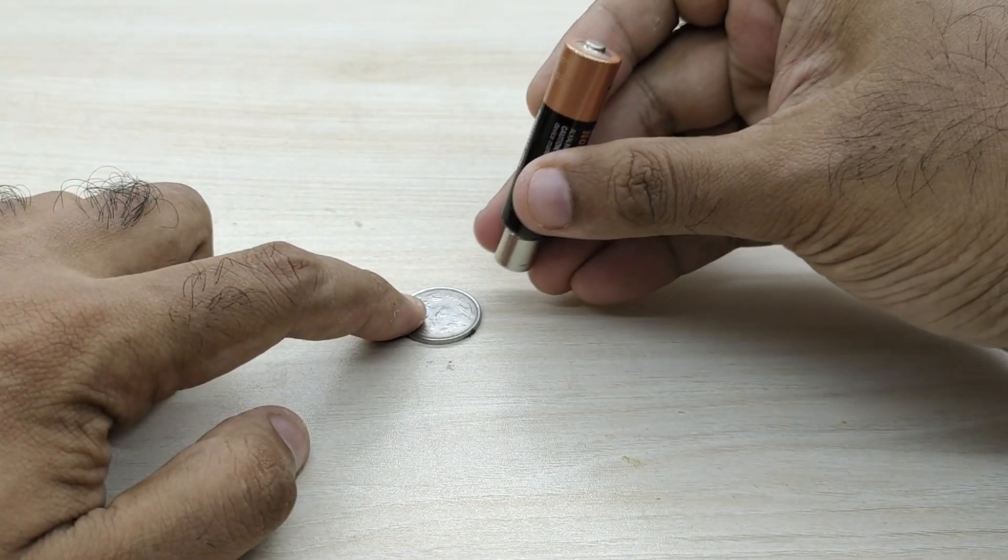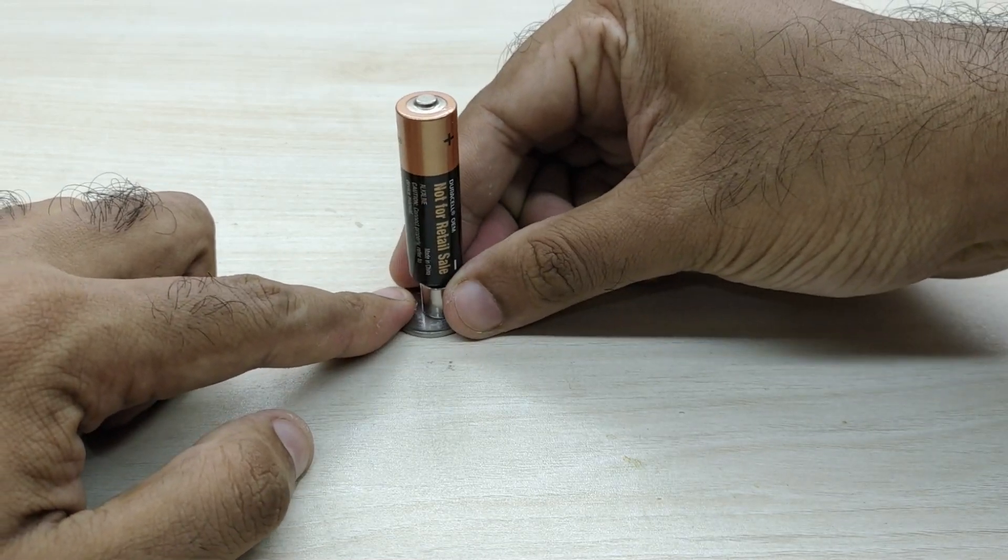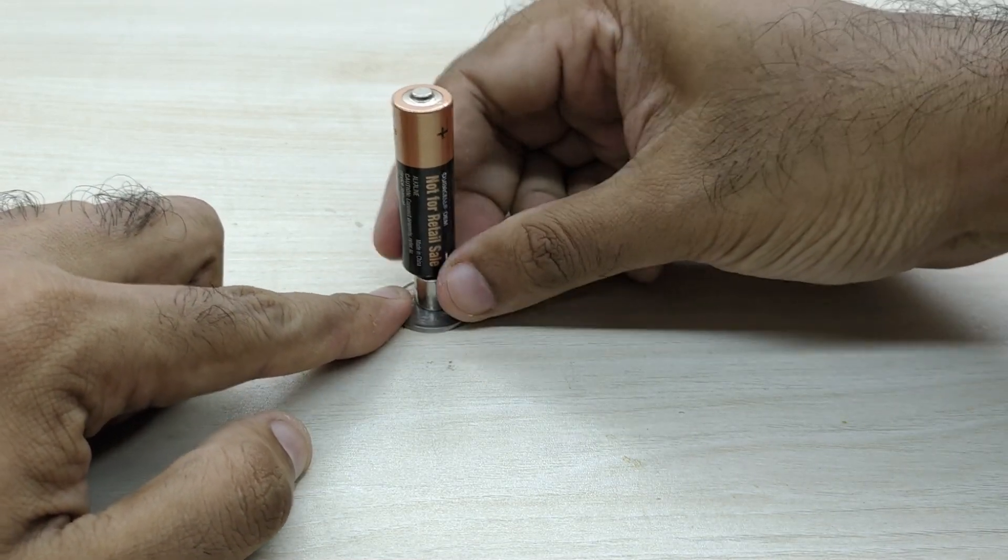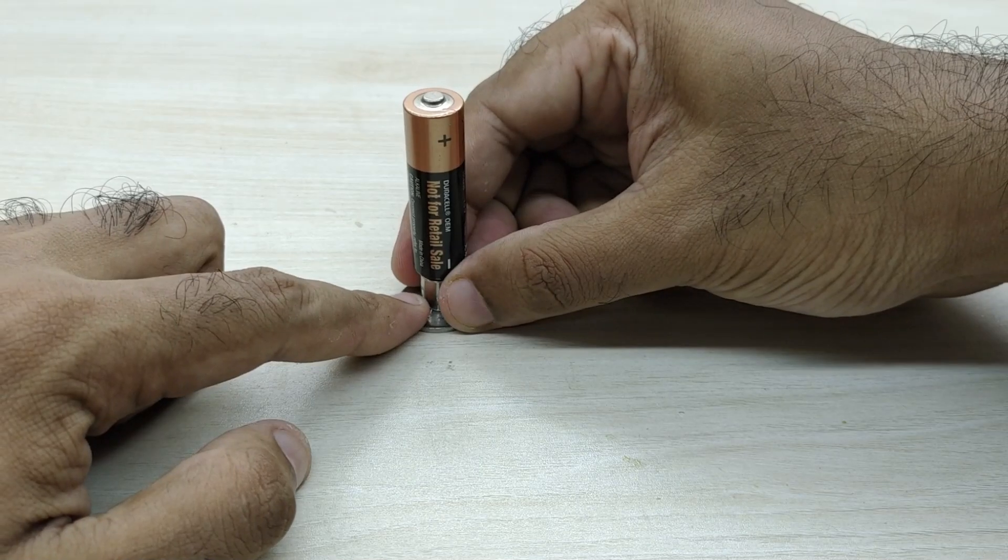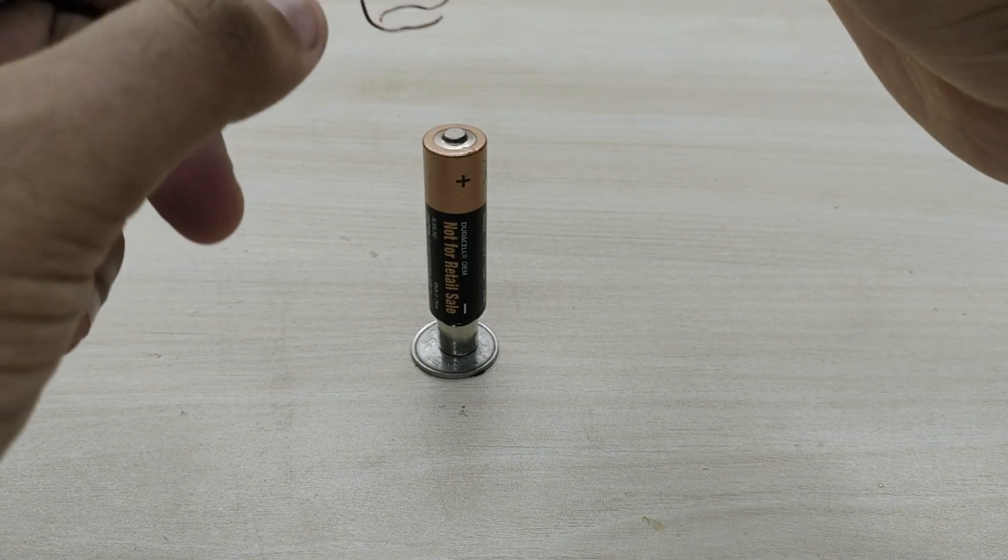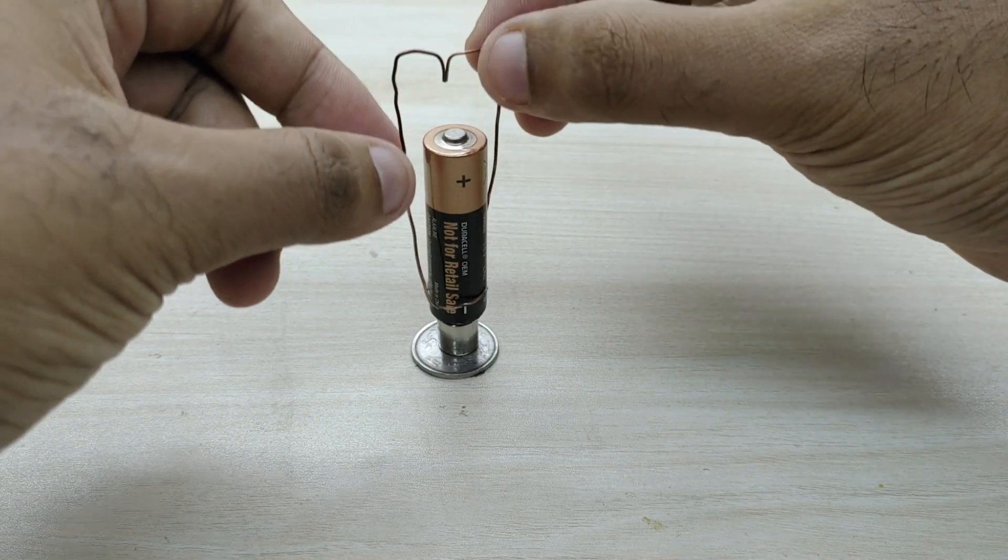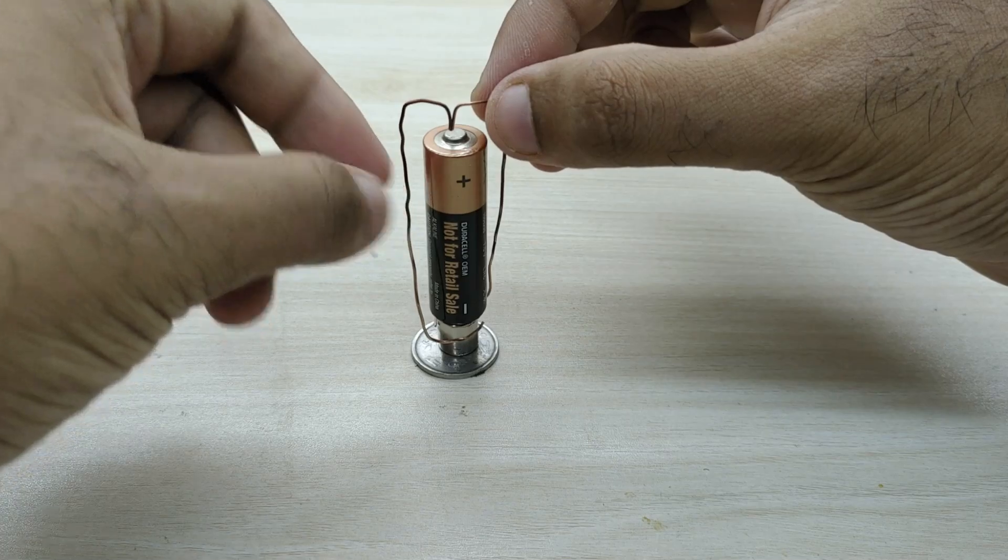I have placed the magnet over a coin so that it serves as a stand for the motor. Now all you have to do is gently insert this copper wire onto the battery and keep the bend at the middle on the positive terminal.